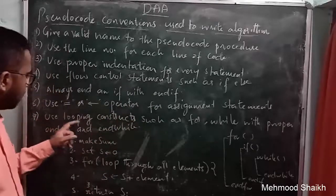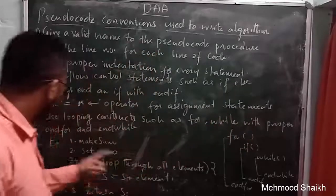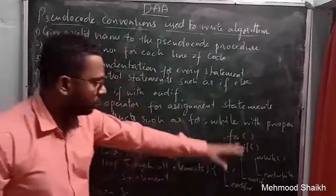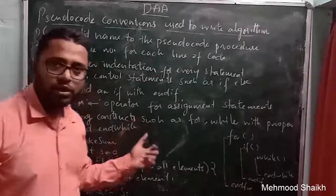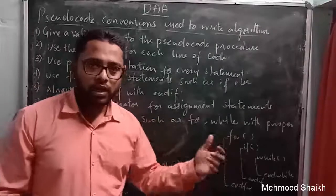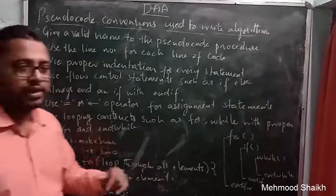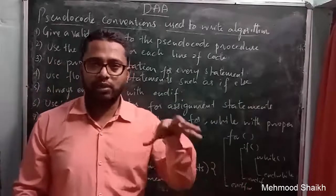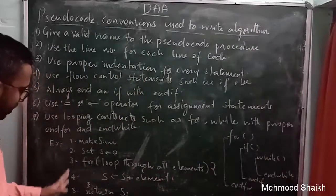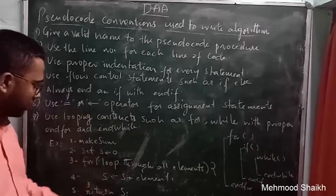The next convention is: use looping constructs such as for and while with proper 'end for' and 'end while'. Wherever you use looping constructs like for, while, and do-while, it is better to use 'end for', 'end while', and 'end do-while', which gives meaning to your pseudocode. Here I have written down an example which will give you an idea of how to write a pseudocode.